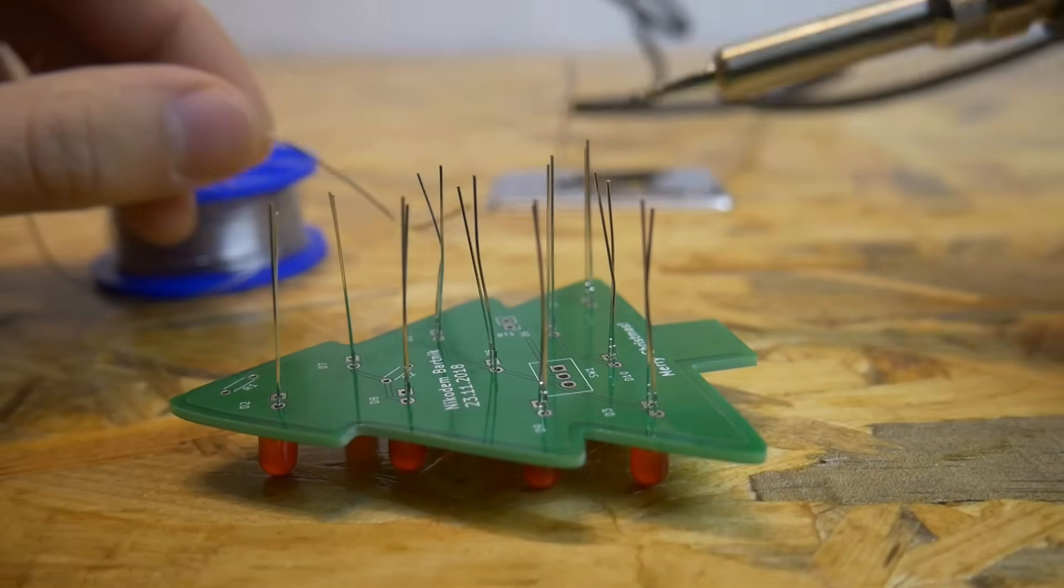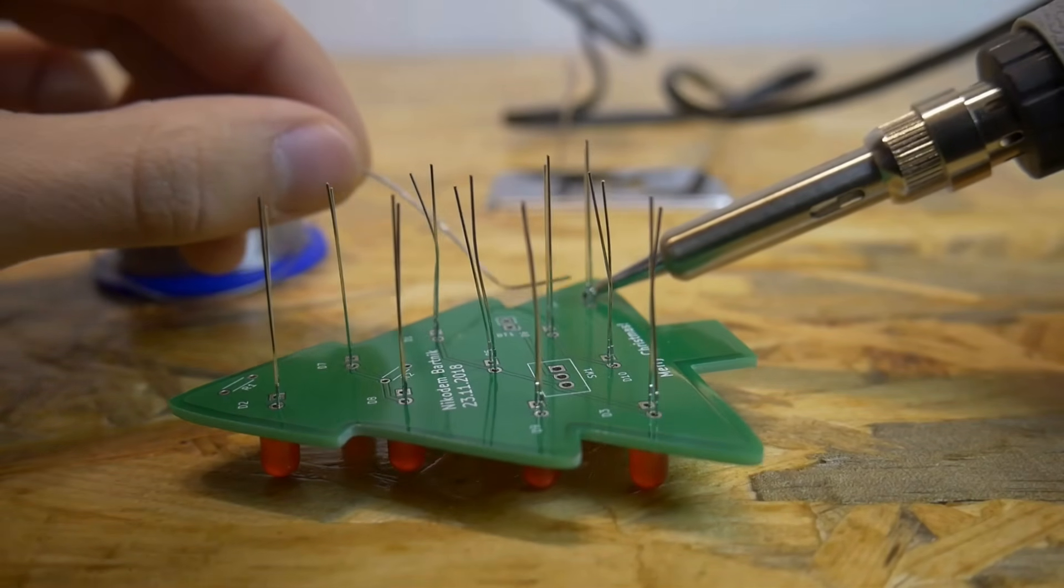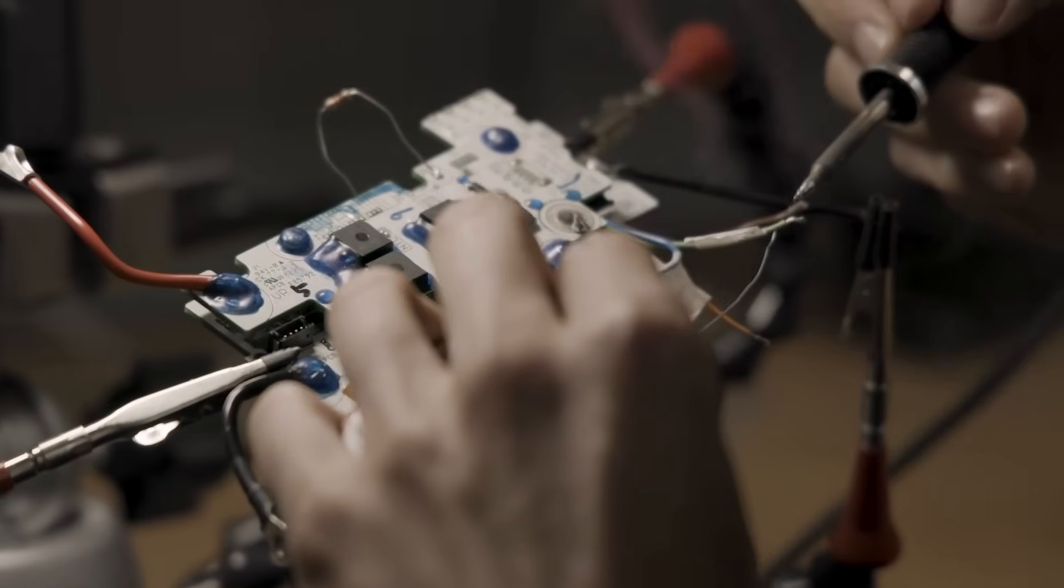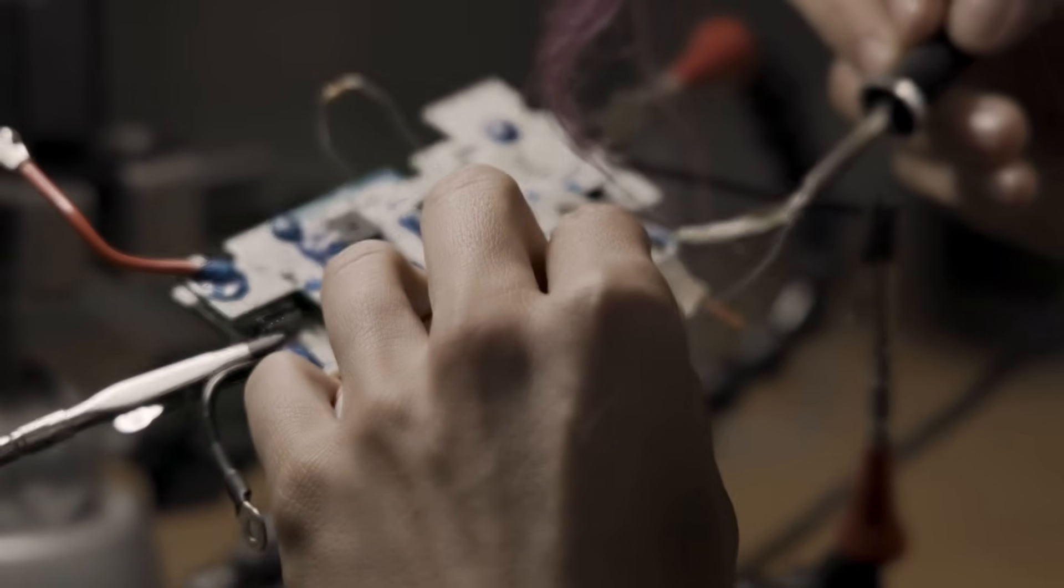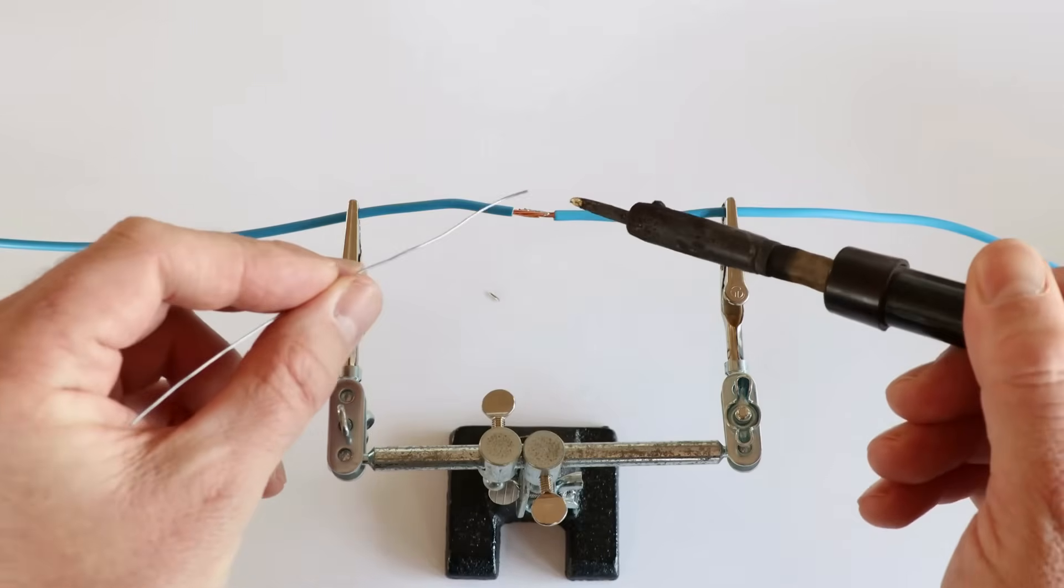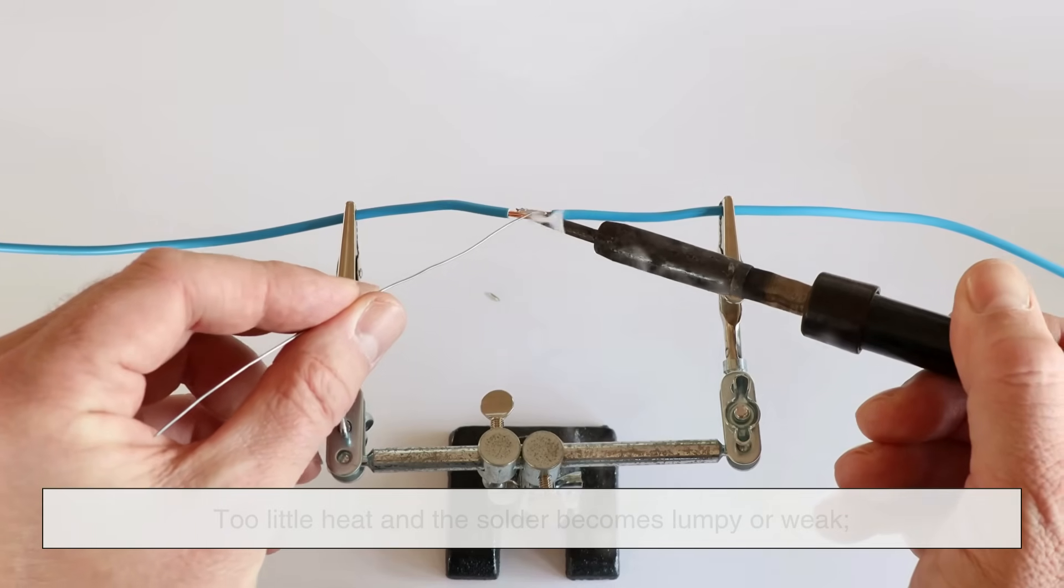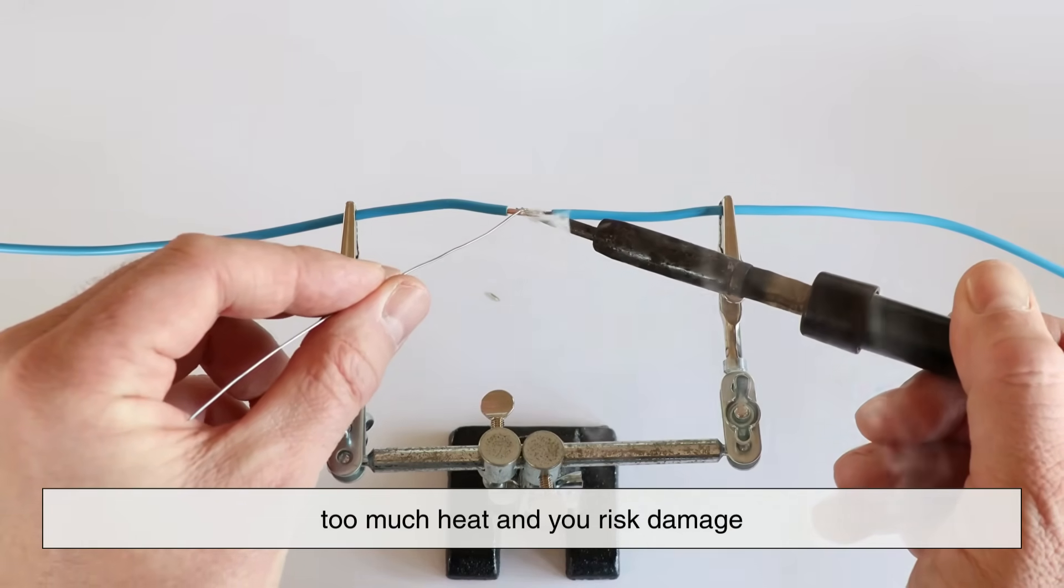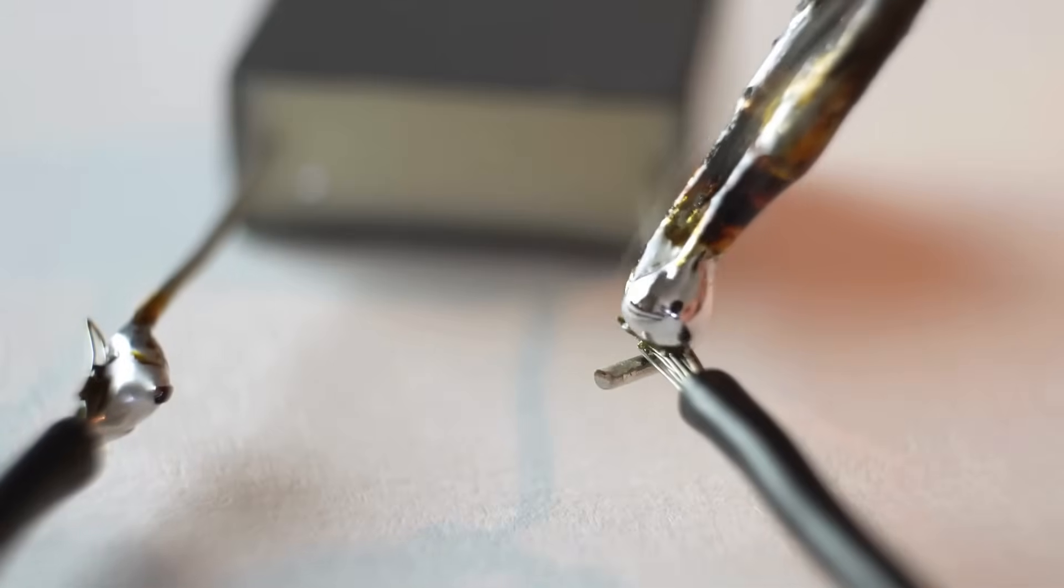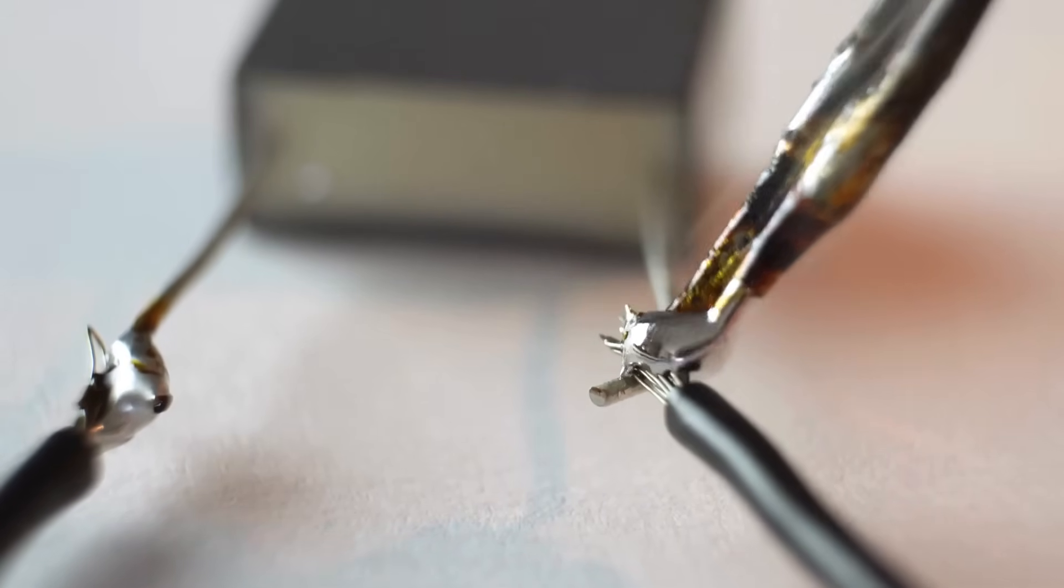Using a soldering iron may seem intimidating, but at its heart, the process is simple. You heat the joint, apply solder to the heated metal, not the tip, allow it to flow, and then remove the heat to let it solidify. The challenge is learning control. Too little heat and the solder becomes lumpy or weak. Too much heat and you risk damage. This is why beginners often practice on scrap boards or wires before working on real components.